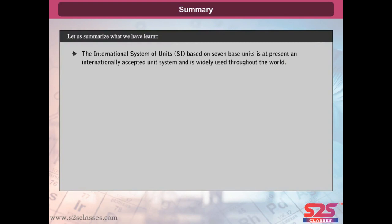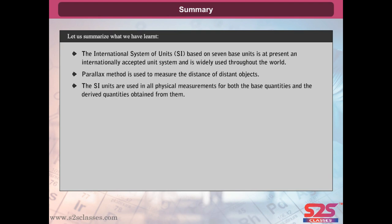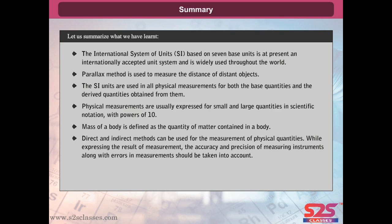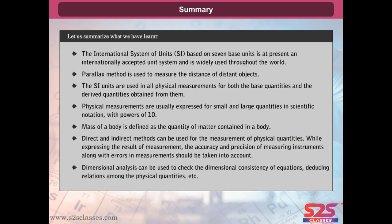The international system of units SI, based on 7 base units, is the internationally accepted unit system widely used throughout the world. The parallax method is used to measure the distance of distant objects. SI units are used in all physical measurements for both base and derived quantities. Physical measurements are usually expressed in scientific notation with powers of 10. Mass is defined as the quantity of matter contained in a body. Direct and indirect methods can be used for measuring physical quantities. The accuracy and precision of measuring instruments, along with errors in measurements, should always be taken into account. Dimensional analysis can be used to check dimensional consistency of equations and to deduce relations among physical quantities.